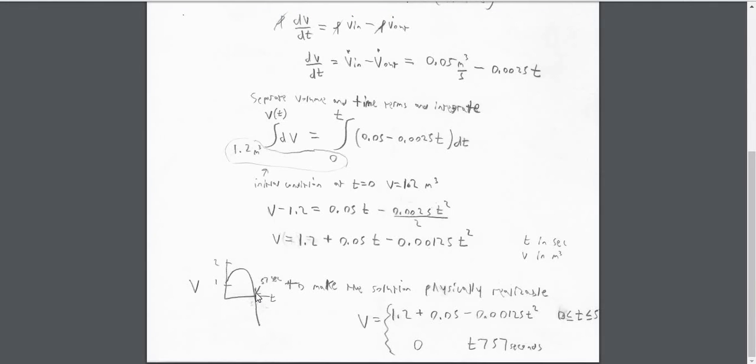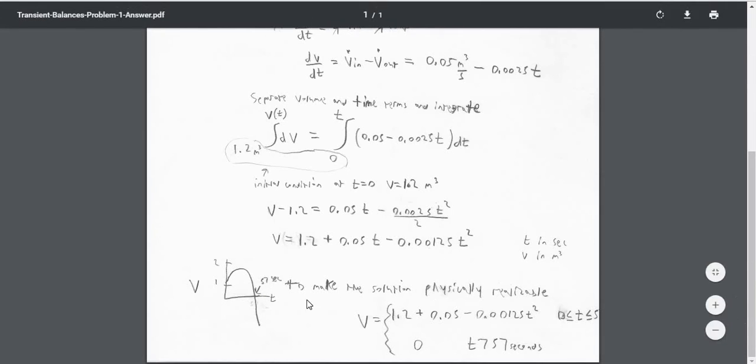So what we did was solve it where the volume is 0, which is about 57 seconds. We said that the volume is going to be equal to this equation from time 0 to 57 seconds. I know that's cut off, but after 57 seconds, there's going to be no more volume. The volume is going to be 0.